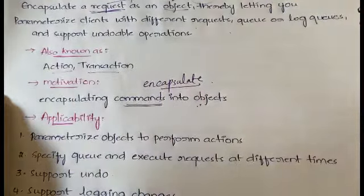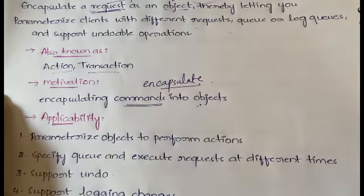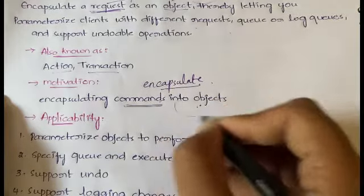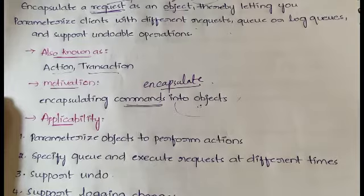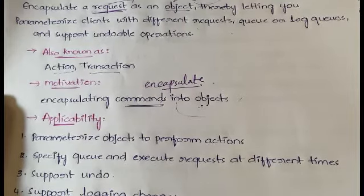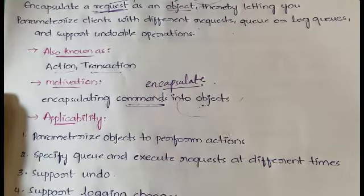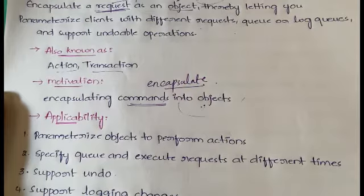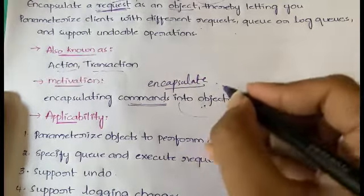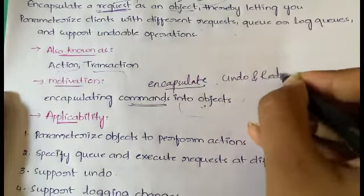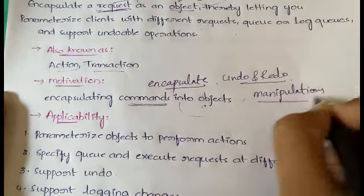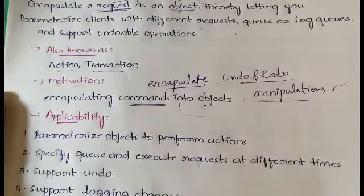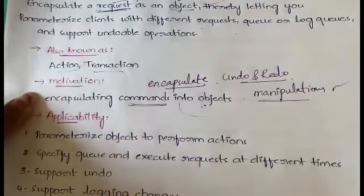That means you will not know which object is going to handle it — you can directly send the request. In Chain of Responsibility you also don't know which object will handle it, but there you followed a chain. Here there is no chain; it directly searches for the object that can exactly handle the request. Additionally, it provides operations to queue commands, and you can also perform undo and redo operations.